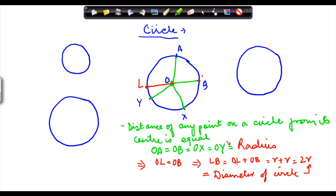Diameter of circle is always 2 times the radius. Are you clear with me? So, basically, LB is equal to the diameter of the circle is equal to 2 times the radius of the circle.